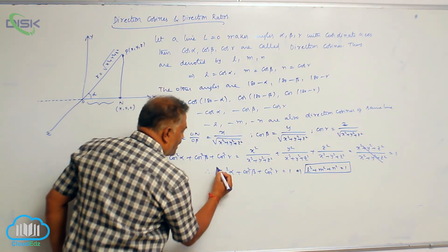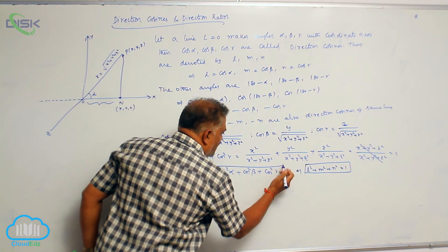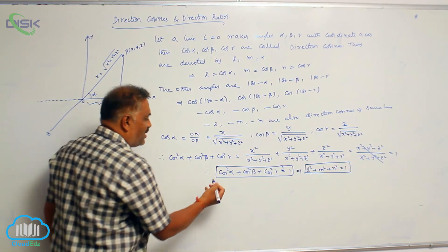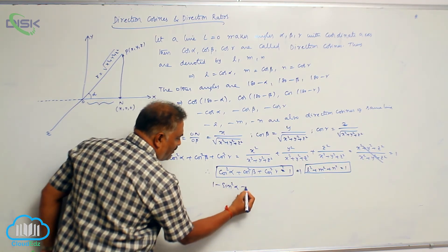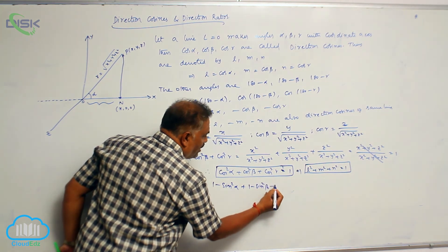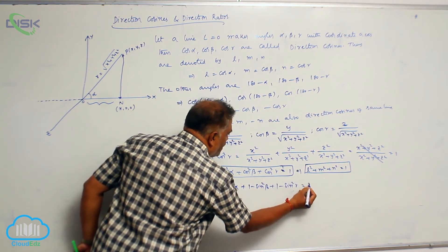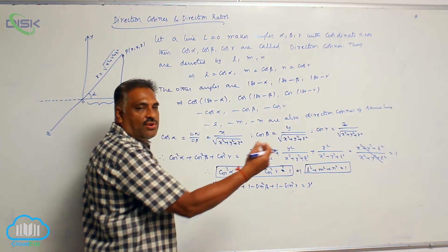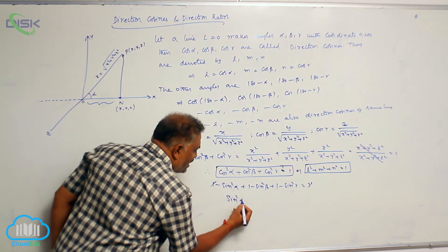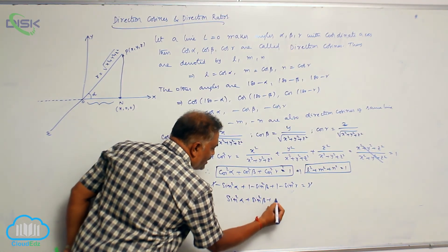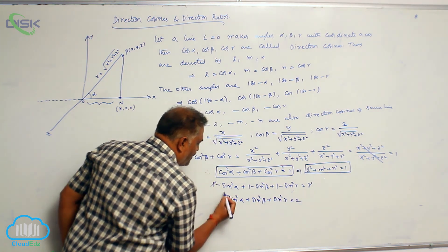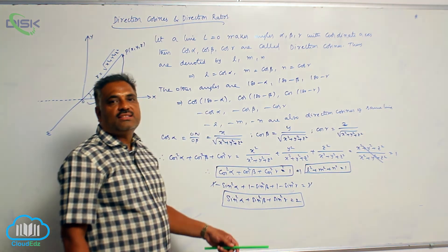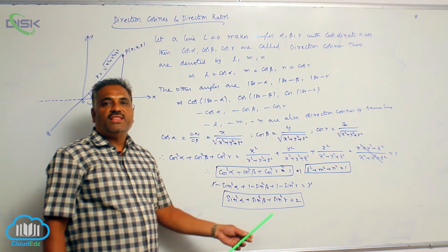One more formula follows: since cos²alpha = 1 − sin²alpha, we can write (1 − sin²alpha) + (1 − sin²beta) + (1 − sin²gamma) = 1. Cancelling and rearranging gives sin²alpha + sin²beta + sin²gamma = 2. These are the two key results based on a line making angles alpha, beta, gamma with the coordinate axes.